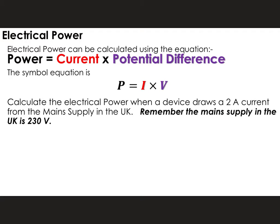So now I'm going to have a go at solving a question related to this. We've got the equation that electrical power is equal to current times potential difference. It says to calculate the electrical power when a device draws a 2 amp current from the main supply in the UK, and it tells you to remember that the main supply is 230 volts. The first step is to highlight what we know in the question — so I've got a 2 amp current and a 230 volt potential difference.